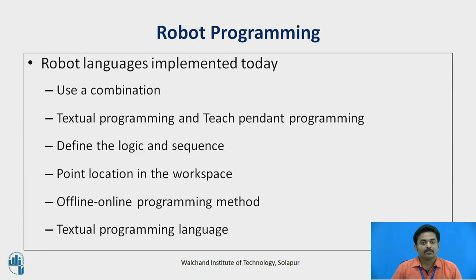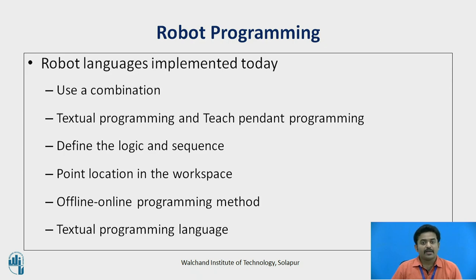The previous session on Robot Programming was devoted to the types of task commands that can be implemented on a robot. The current session will be concerned with Textual Languages for Robot Programming. Most of the robot languages implemented today use a combination of Textual Programming and Teach Pendant Programming. The Textual Language is used to define the logic and sequence of the program, while the specific point locations in the workspace are defined using Teach Pendant control.